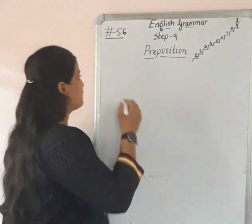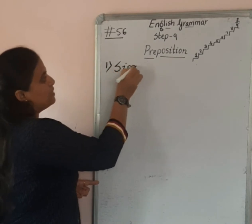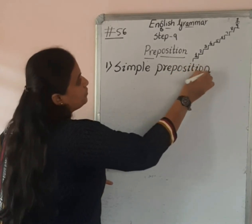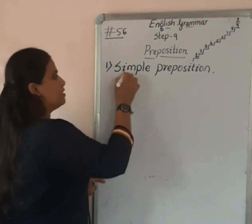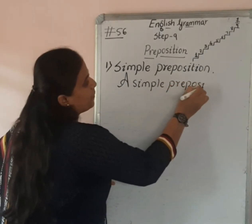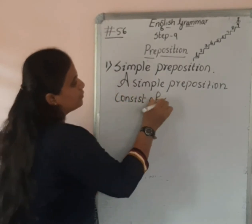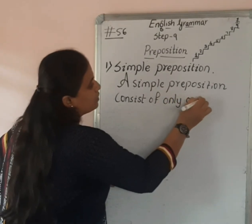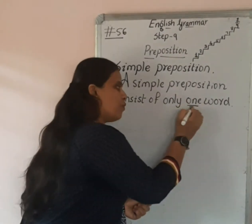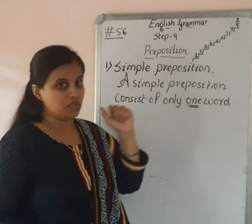Let's have a look at prepositions divided on the basis of construction or structure. The first type is simple preposition. What are simple prepositions? A simple preposition consists of only one word. The highlighted word here is one word. So, simple preposition — it consists of only one word.